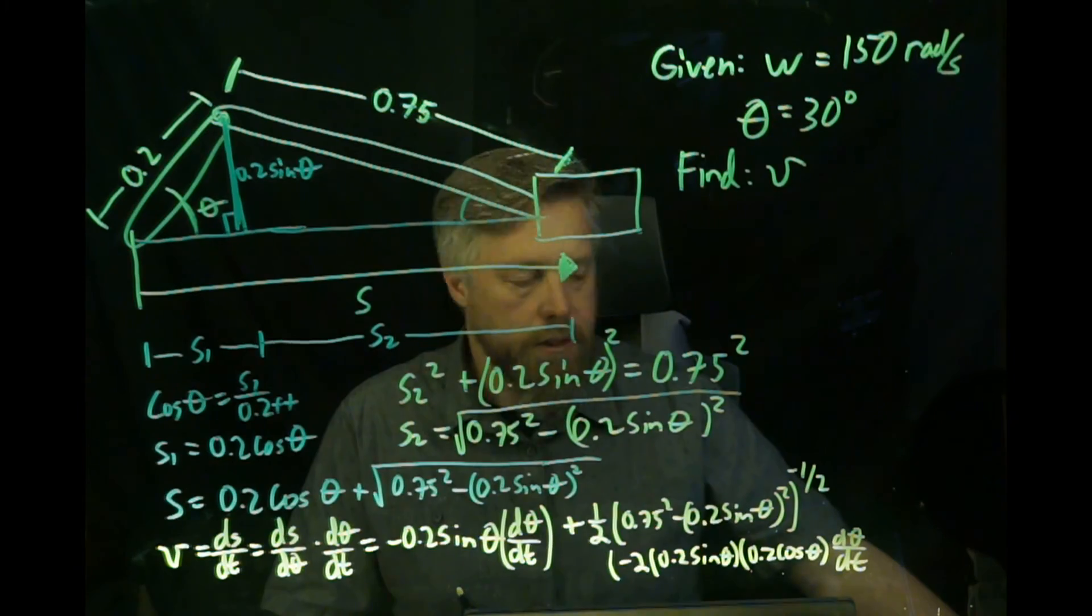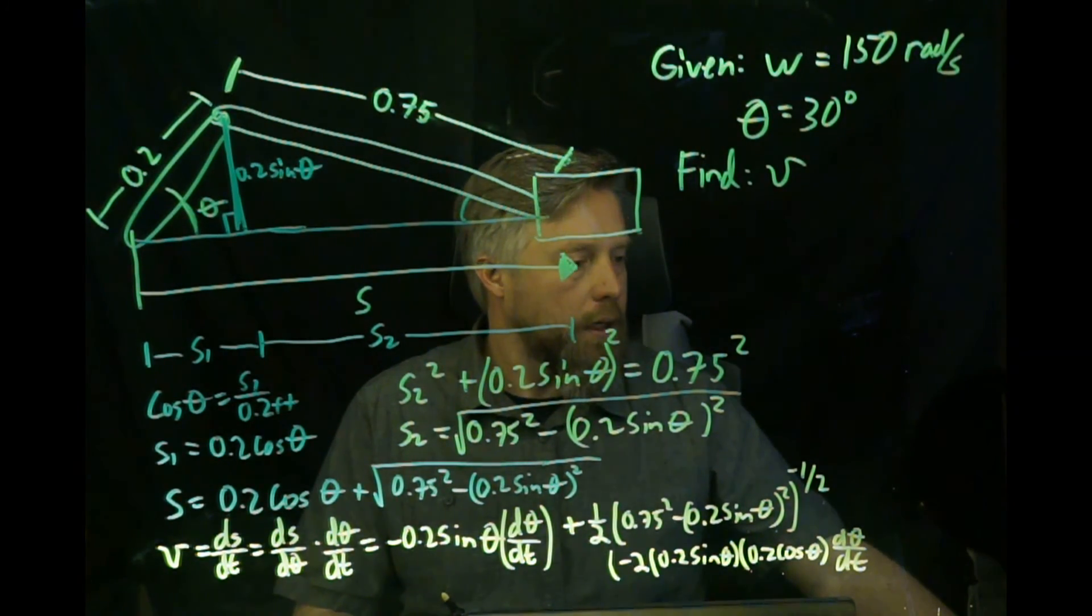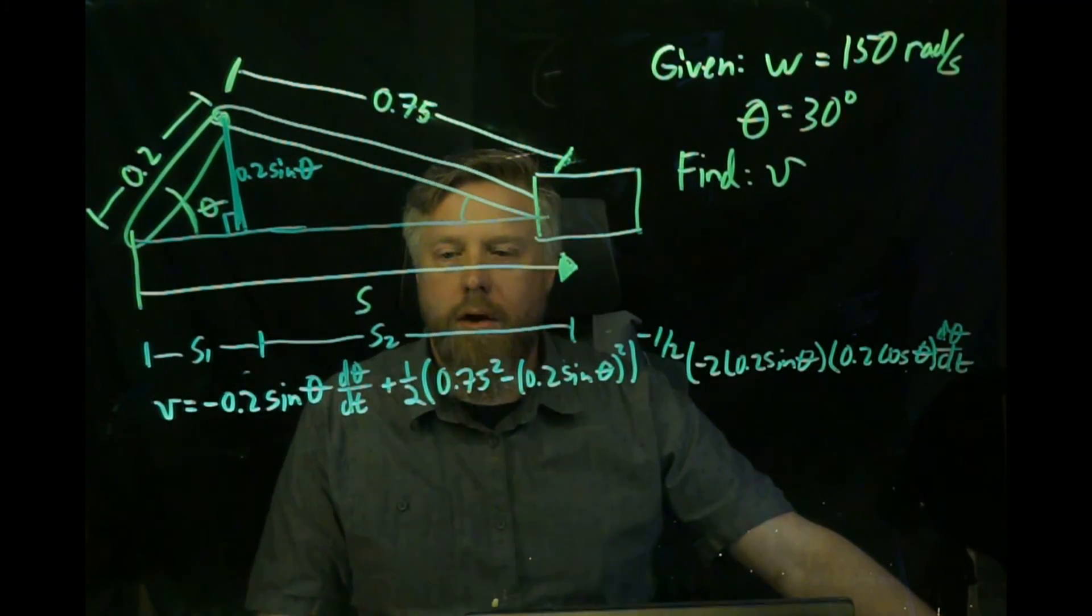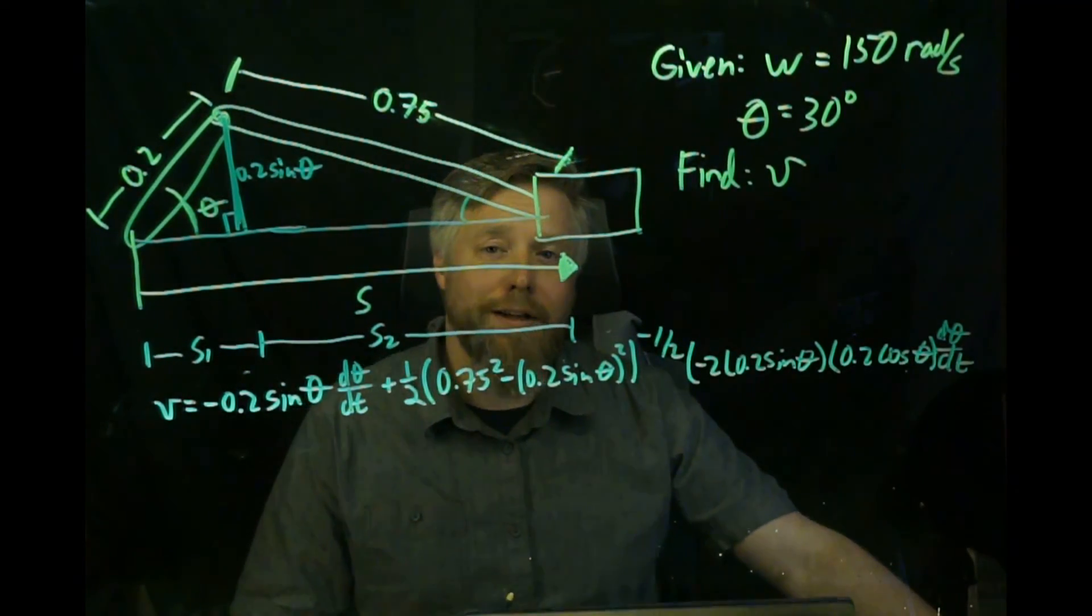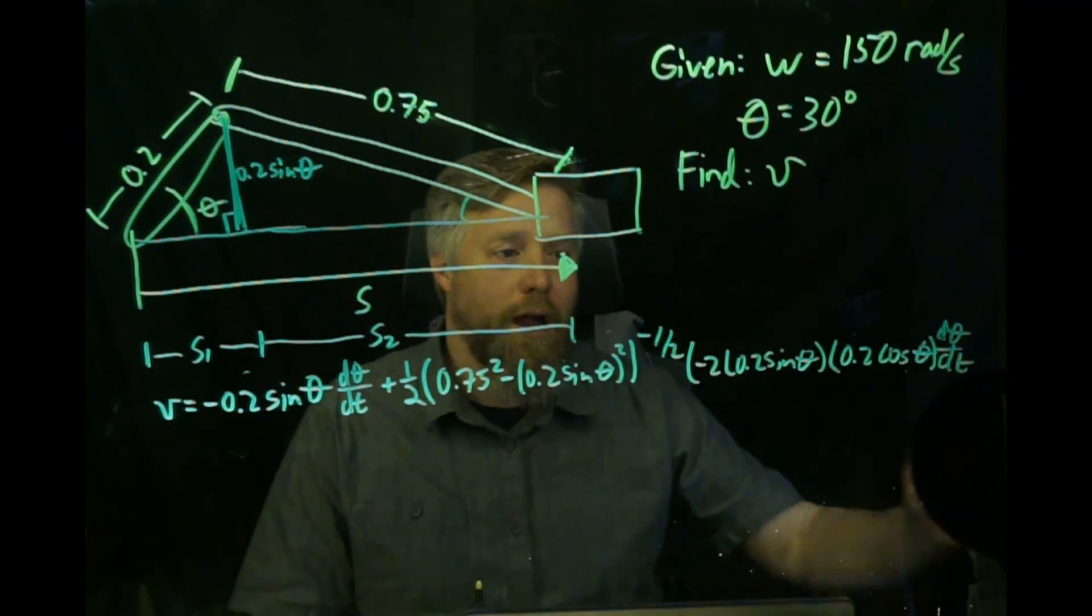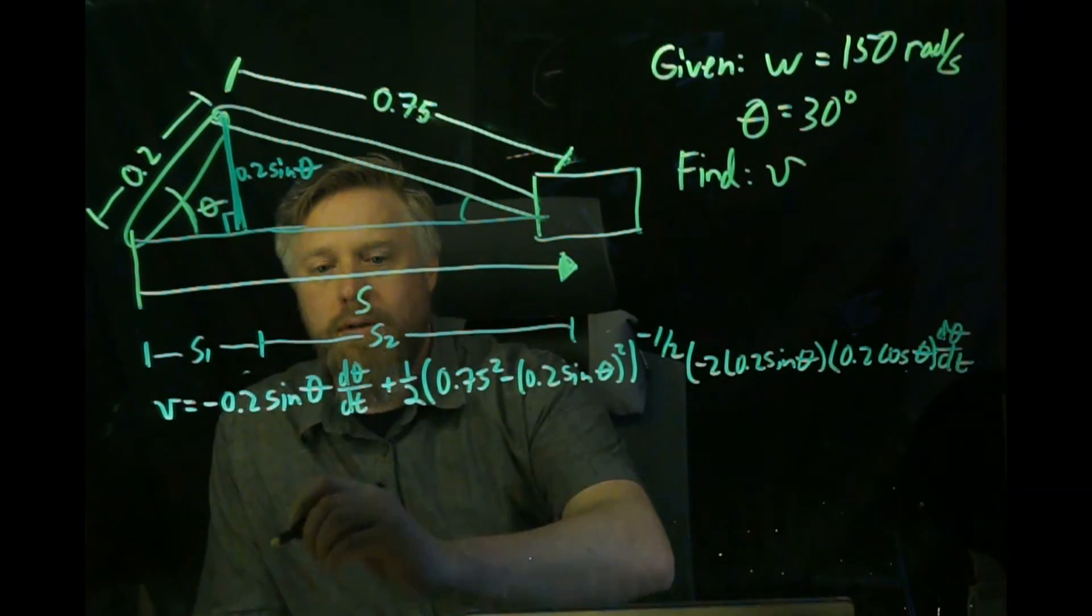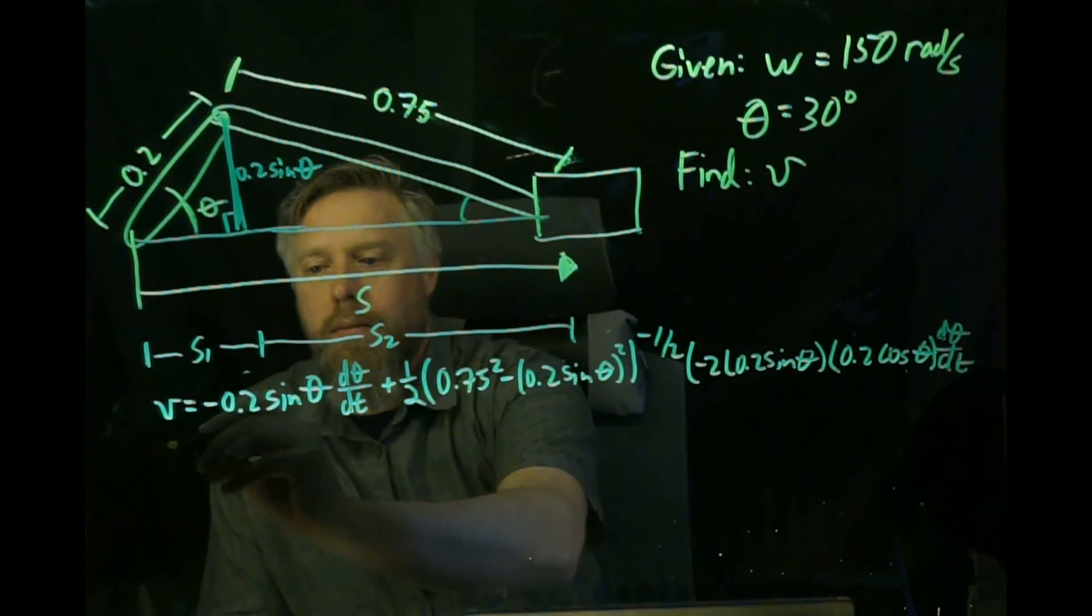I think we've got all of the terms. Now we just need to clean it up and plug in the givens. I'm just going to give myself a little more room. Now a lot of this is just record keeping and practice, making sure you have all the components. I just rewrote the equation we had and now we're going to clean it up a little bit. We know d theta/dt is omega.